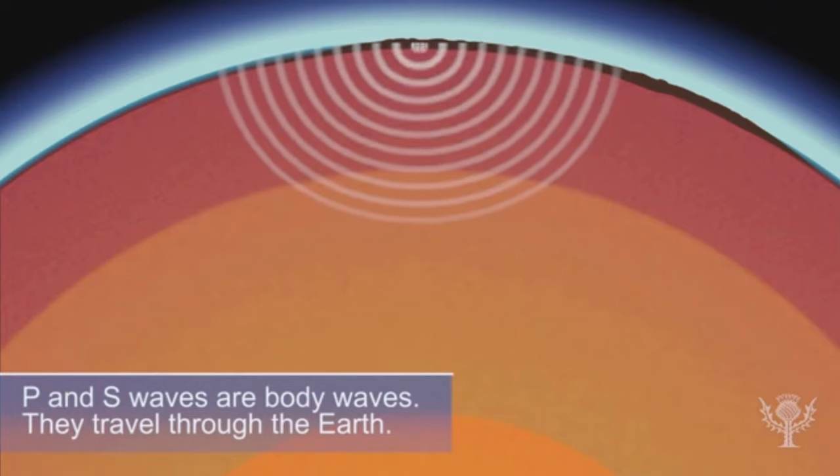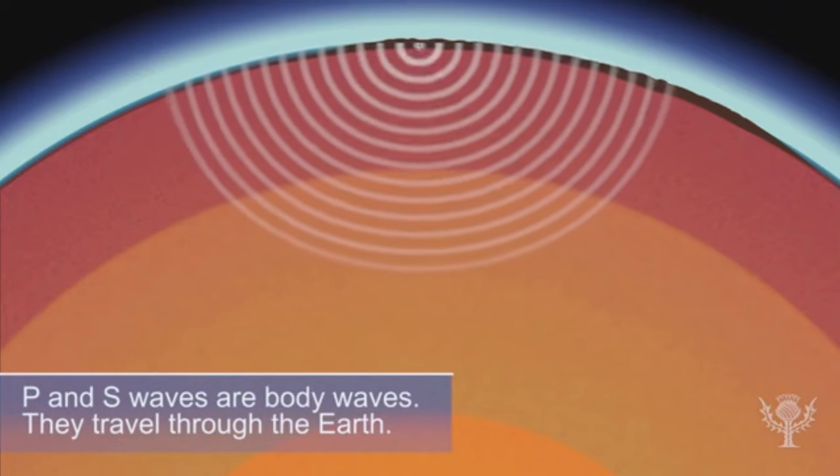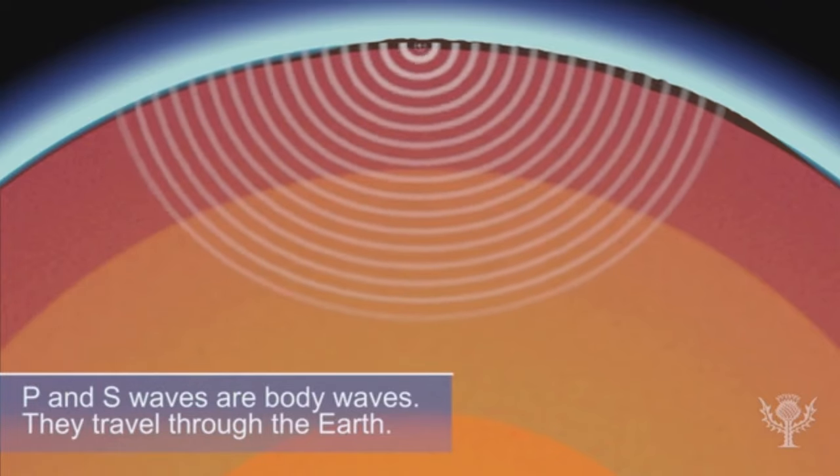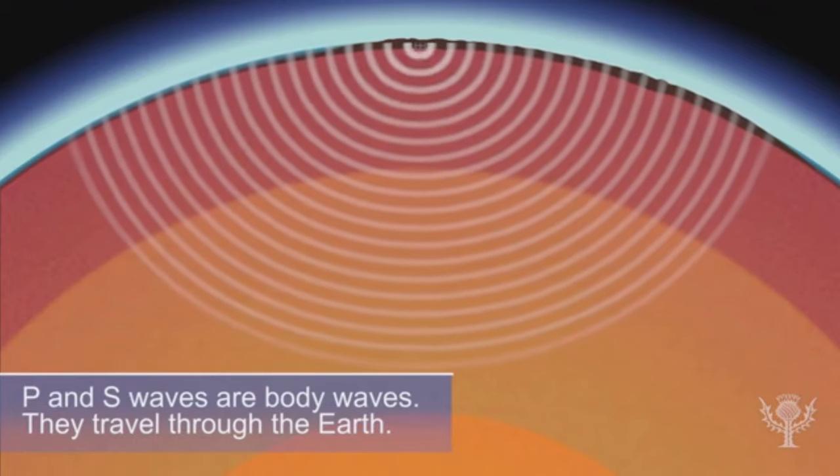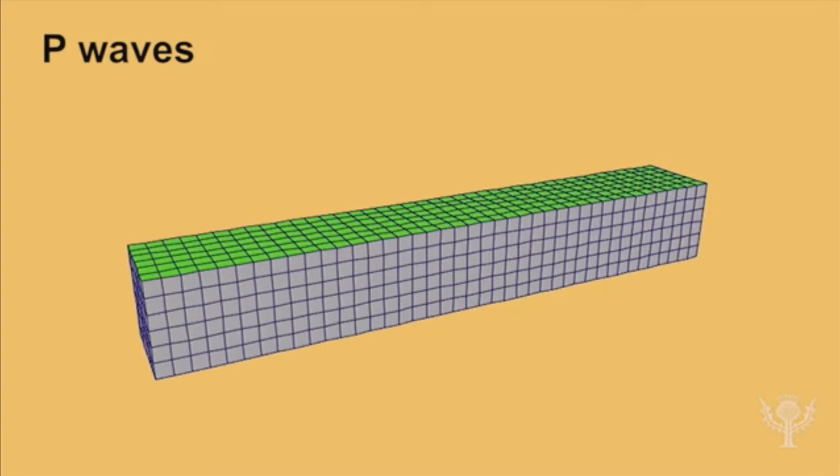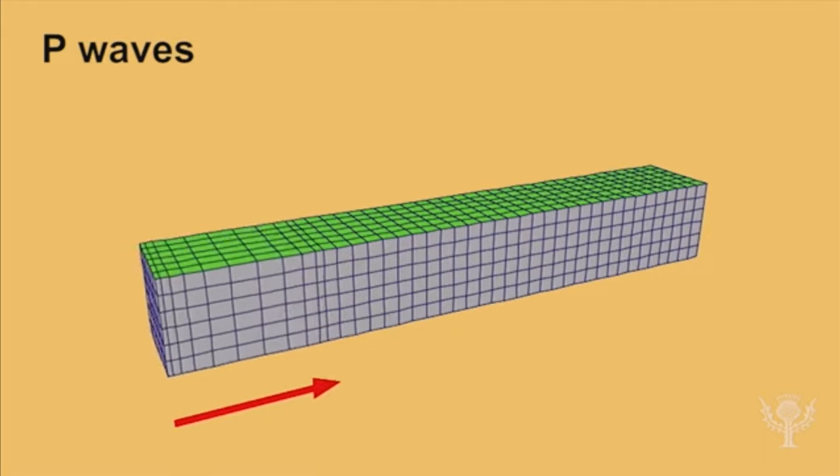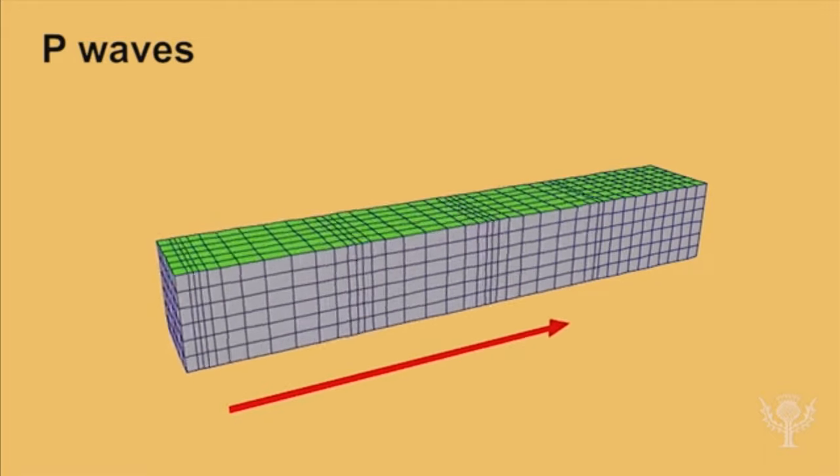Body waves travel within the body of Earth. They include P or primary waves and S or secondary waves. P waves cause the ground to compress and expand, that is to move back and forth, in the direction of travel.